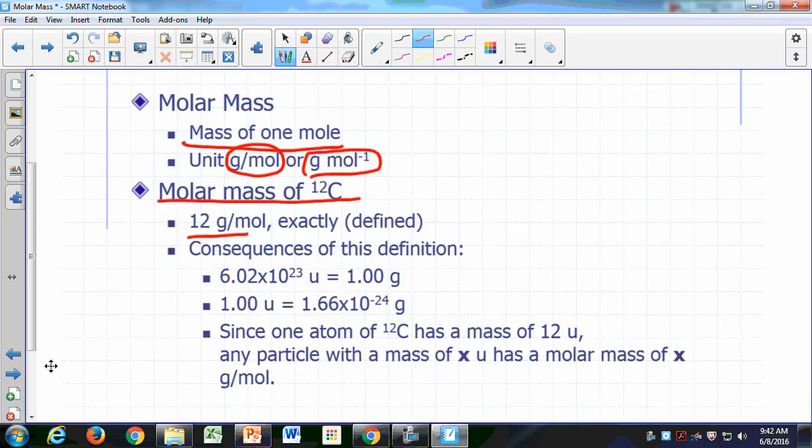Consequences of this definition is as follows. If you have basically an Avogadro number of atomic mass units, remember U is atomic mass units, 6.02 times 10 to the 23rd atomic mass units, that's going to be 1.00 gram. Now, based on this relationship, if you divide both sides of this equation by 6.02 times 10 to the 23rd, you can also say that one atomic mass unit is 1.66 times 10 to the negative 24 grams.